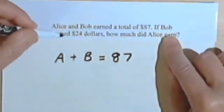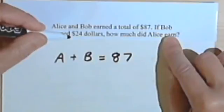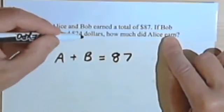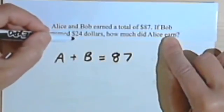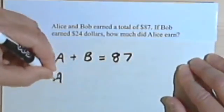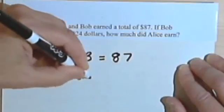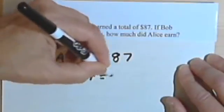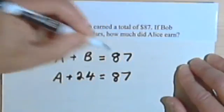And then the problem tells me that Bob earned $24. So the amount of money that Bob earned is $24, which means instead of this B, I can write $24. So now I just have A plus $24 equals $87.